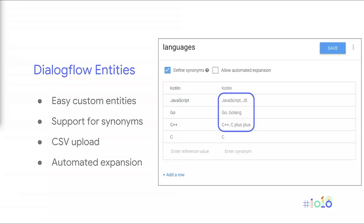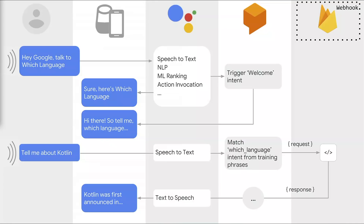And how do I account for the variation in the way each programming language is spoken? Programming languages have nicknames. Dialogflow offers the feature of designating synonyms for each canonical value. But now the user is going to respond with a request to know about some specific language — let's say they say, tell me about Kotlin. And this time, the Google Assistant is going to hand off directly to my action, because the user's already entered the dialogue. It's going to handle the speech-to-text transcription, and Dialogflow is going to match the which-language intent. But this time, instead of responding, it's going to reach out to my webhook hosted on Cloud Functions for Firebase, and it's going to dynamically pull information about that language and present it to the user.